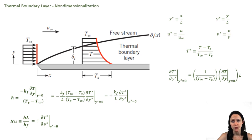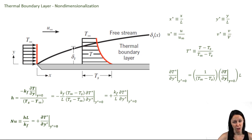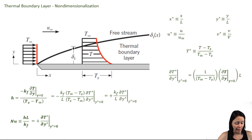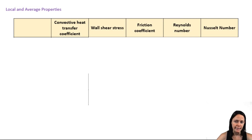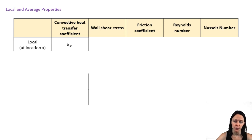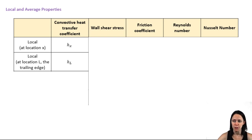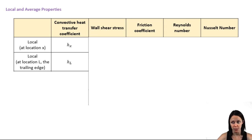Now it's time to introduce the concept of local and average parameters. We can define the Nusselt number — that non-dimensionalized heat transfer coefficient — at a specific location x, or we can average it over the entire plate. We can even express parameters as an average up to a specific location x, or between two specified locations. The local heat transfer coefficient is defined at a specific location x. You may also see a heat transfer coefficient defined at the trailing edge; don't get confused with the way it's written — this is still the local coefficient, not the average.